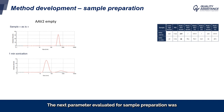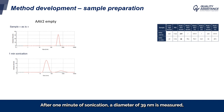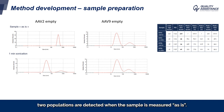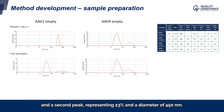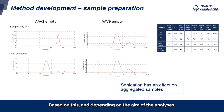The next parameter evaluated was the influence of sonication on the sample. For AAV2MT, a particle diameter of 400 nanometers was measured, indicating aggregation. After one minute of sonication, a diameter of 39 nanometers was measured — more or less the size of a monomeric AAV — indicating that aggregation was reversible. For the second sample, two populations are detected as is: a first peak representing 77% in intensity with a diameter of 34 nanometers, and a second peak representing 23% with a diameter of 450 nanometers. After one minute of sonication, the size distribution does not change, with the same percentage of each population and comparable particle sizes. Based on this, and depending on the aim of the analysis, the sonication step and its influence on the result should be assessed.